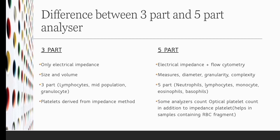Let's summarize the difference between the 3 part and the 5 part analyzers. In the 3 part analyzers, the only principle usually used is electrical impedance, while in 5 part, the combination of principles are used: electrical impedance, light scatter, and flow cytometry. The 3 part measures the size and the volume only, where the 5 part measures the diameter, granularity, and complexity. The 3 part includes the lymphocytes, mid population, and granulocytes, and the 5 part includes all five different types of WBCs: neutrophils, lymphocytes, monocytes, eosinophils, and basophils.